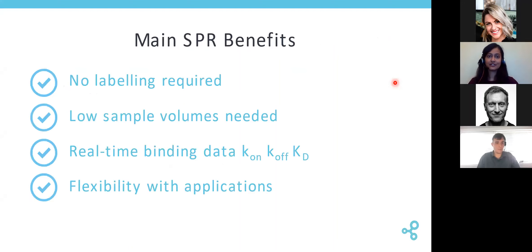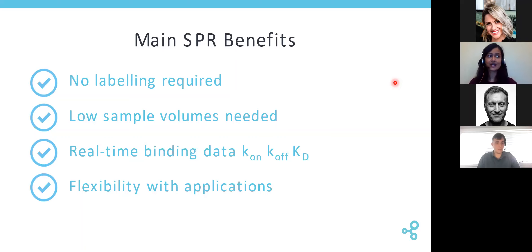Some of the main benefits of SPR: first off, no labeling is required, so no radioactive or fluorescent labels — your experiment can be done with samples in their wild format. You need low sample volumes, which is very important when working with protein purification or crude samples. You're able to get real-time binding data with SPR, so you don't have to wait a couple of days or weeks. And lastly, there's flexibility in terms of application — protein-protein, protein-antibody, protein-small molecule, protein-carbohydrates, to name a few — you can work with all those applications using SPR.